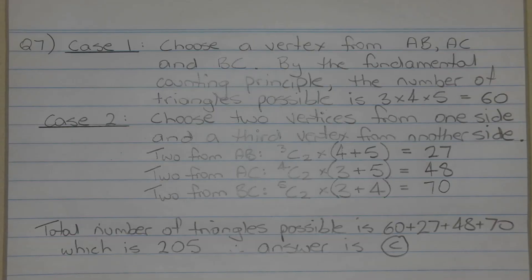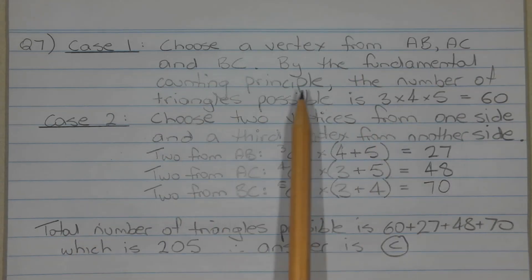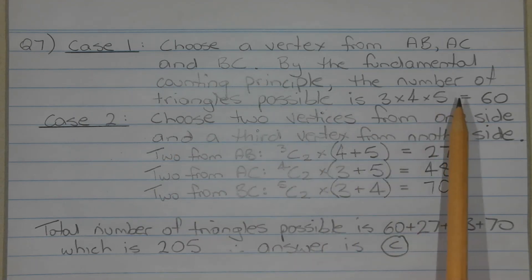There are two cases to consider. In the first case, choose a vertex from sides AB, AC and BC. By the fundamental counting principle, the number of triangles possible is 3 times 4 times 5, which equals 60.